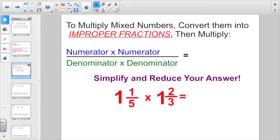So to multiply mixed numbers, first you have to convert them into improper fractions, then multiply. We already know how to do that. We've got numerator times numerator, denominator times denominator. Remember to simplify and reduce your answer if necessary.